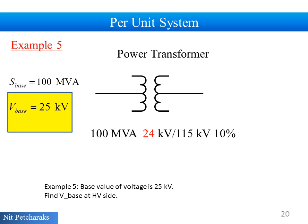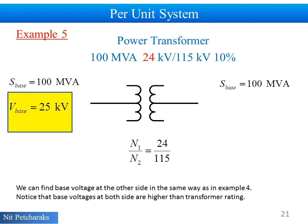In example 5, base value of voltage is 25 kV. This is base voltage at low voltage side. We can find base voltage at the other side in the same way as in example 4. Notice that base voltages at both sides are higher than transformer rating.